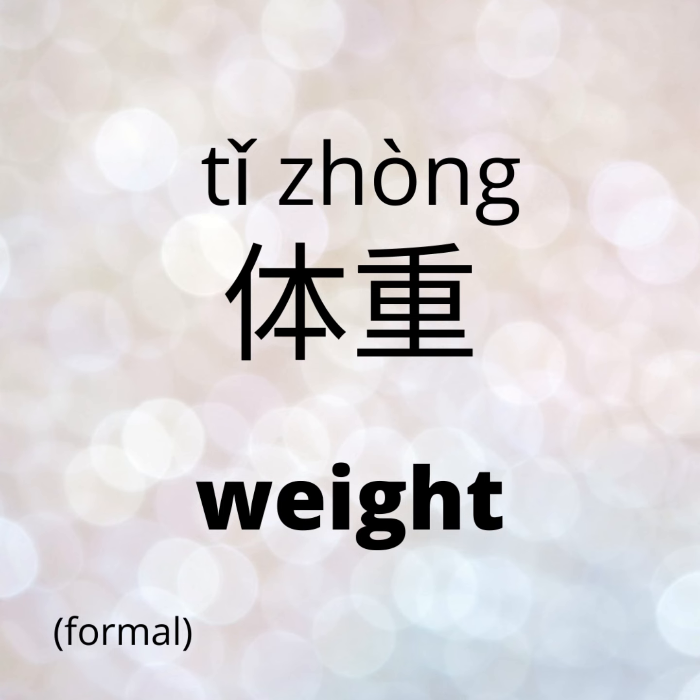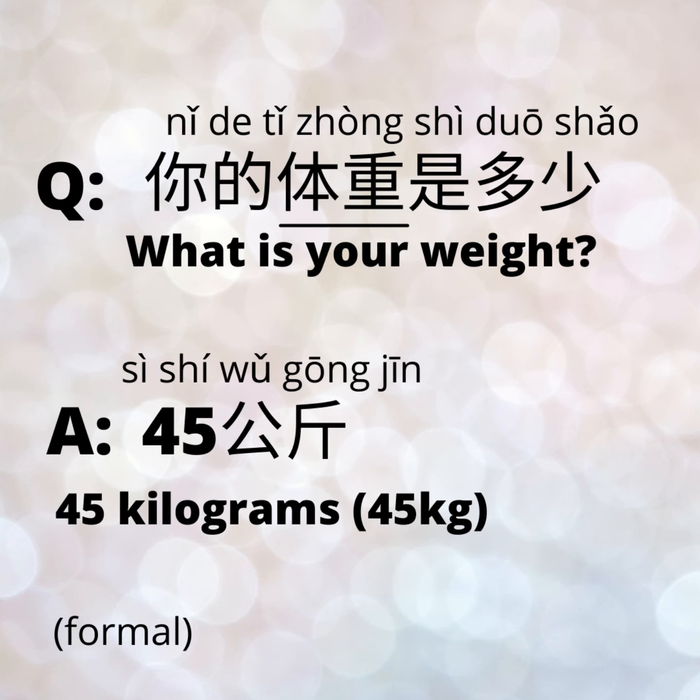For weight, we need to know 体重, which means weight. Once again, in a formal setting, someone may ask 你的体重是多少? — meaning 'What is your weight?' Our example answer is still 45 kilograms, so we'll say 四十五公斤. Notice now we're using 公斤, which means kilogram, whereas before we used 斤, which was half a kilogram.